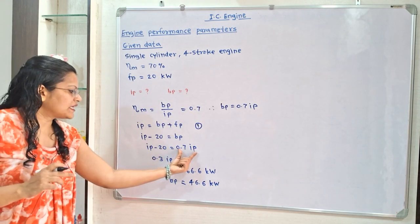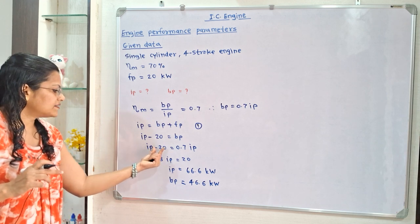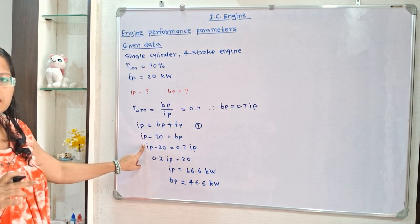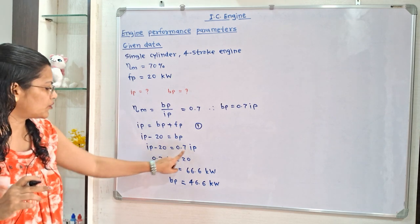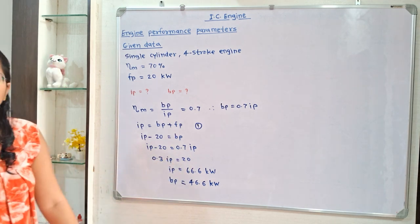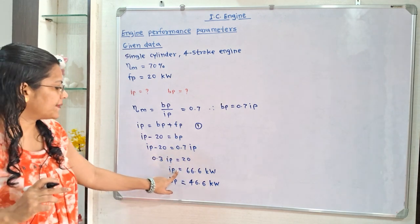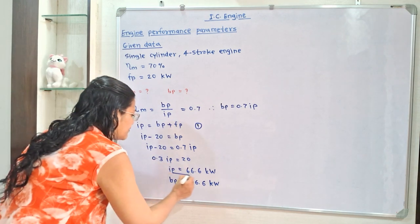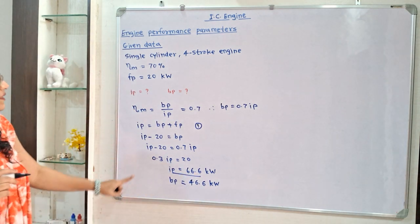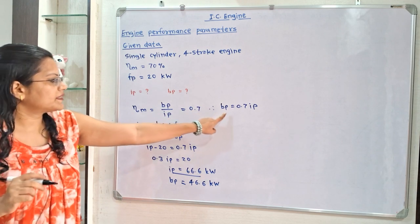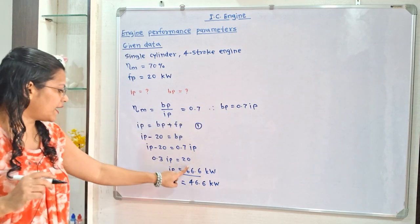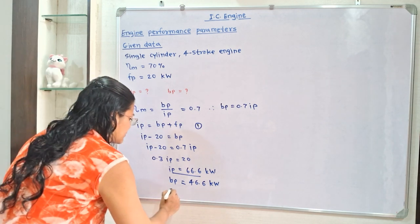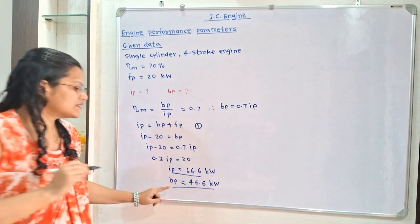Transferring 0.7 ip to the left-hand side and 20 to the right-hand side, the coefficient gives 1 minus 0.7, that is 0.3 ip equals 20. Therefore indicated power equals 66.6 kilowatt. This is the first answer. Brake power equals 0.7 into indicated power, that is equal to 46.6 kilowatt. This is the second answer.